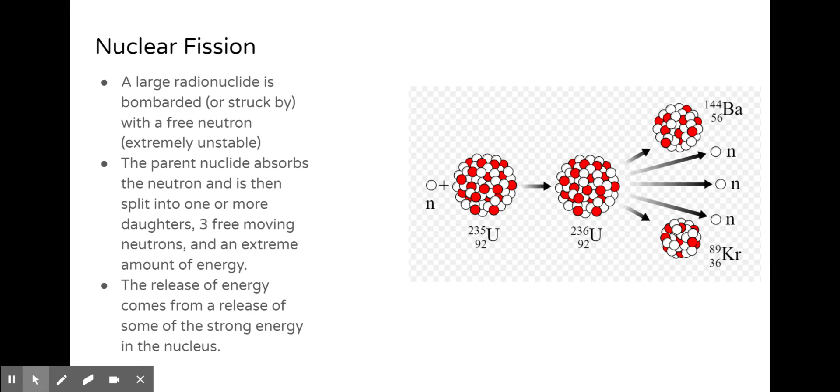The parent nuclide absorbs the neutron, is then split into one or more daughter isotopes, three free-moving neutrons, and an extreme amount of energy. Because remember, the strong nuclear force is what holds the nucleus together. Anytime I have an interaction with that strong nuclear force, there are going to be extreme amounts of energy that are absorbed or released. In this case, it is going to be released.